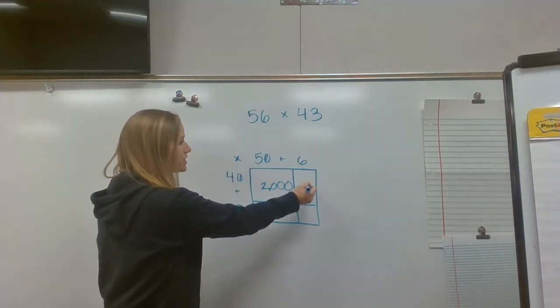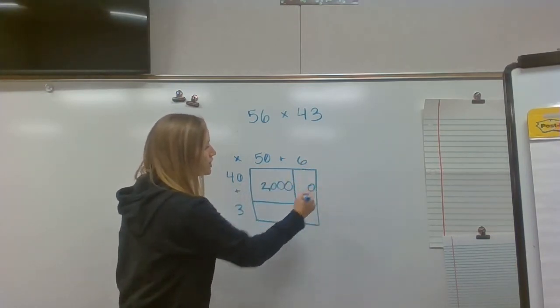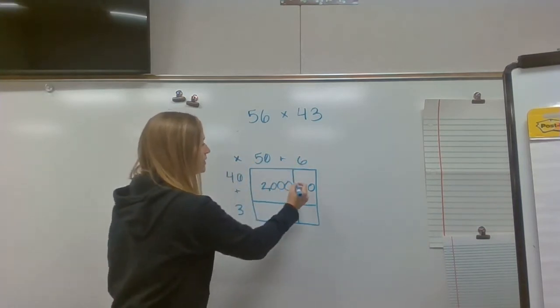Now, I'm going to move over to this place value, and I see I have one zero here, and I don't have any there, so I'm just putting one zero in there. Now, my next step is to do six times four, and that's 24.